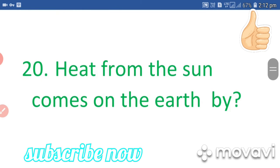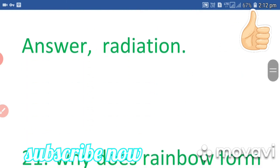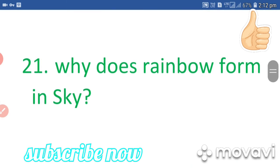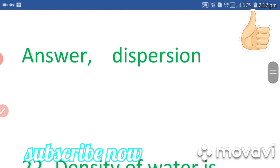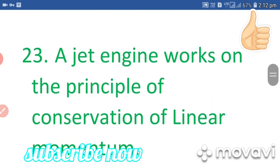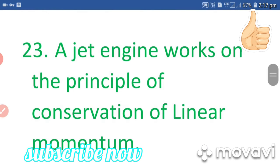Question 20: Heat from the sun comes to the Earth by radiation. Question 21: Why does a rainbow form in the sky? Answer: Dispersion. Question 22: The density of water is maximum at 4 degrees Celsius. Question 23: A jet engine works on the principle of conservation of linear momentum.